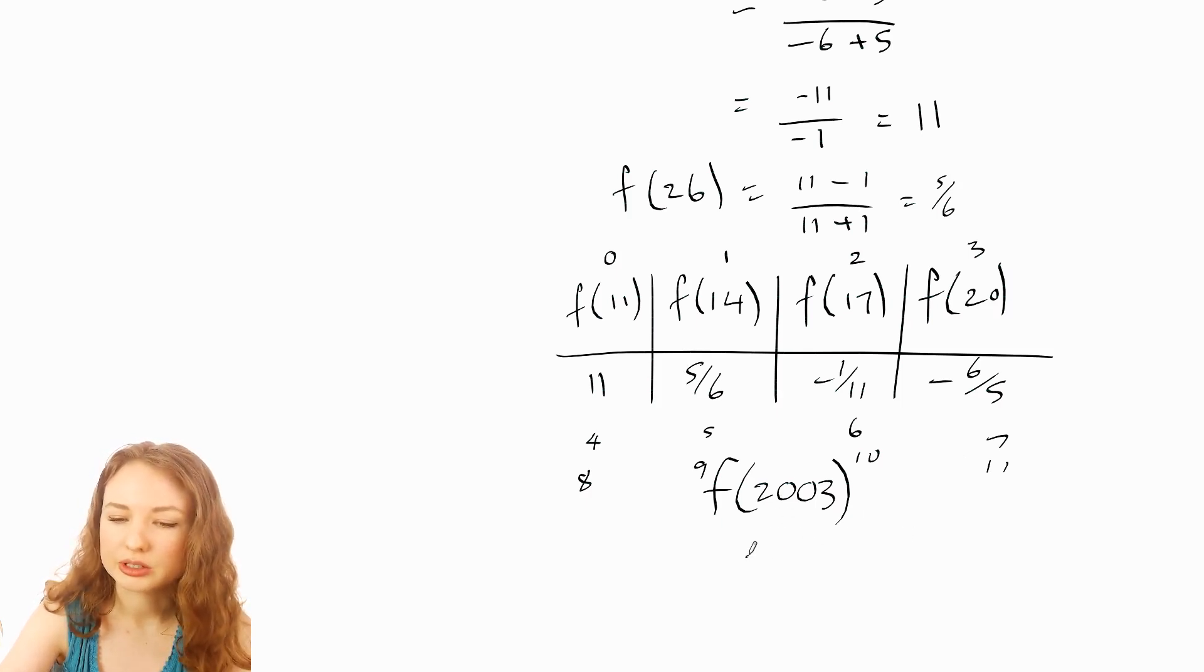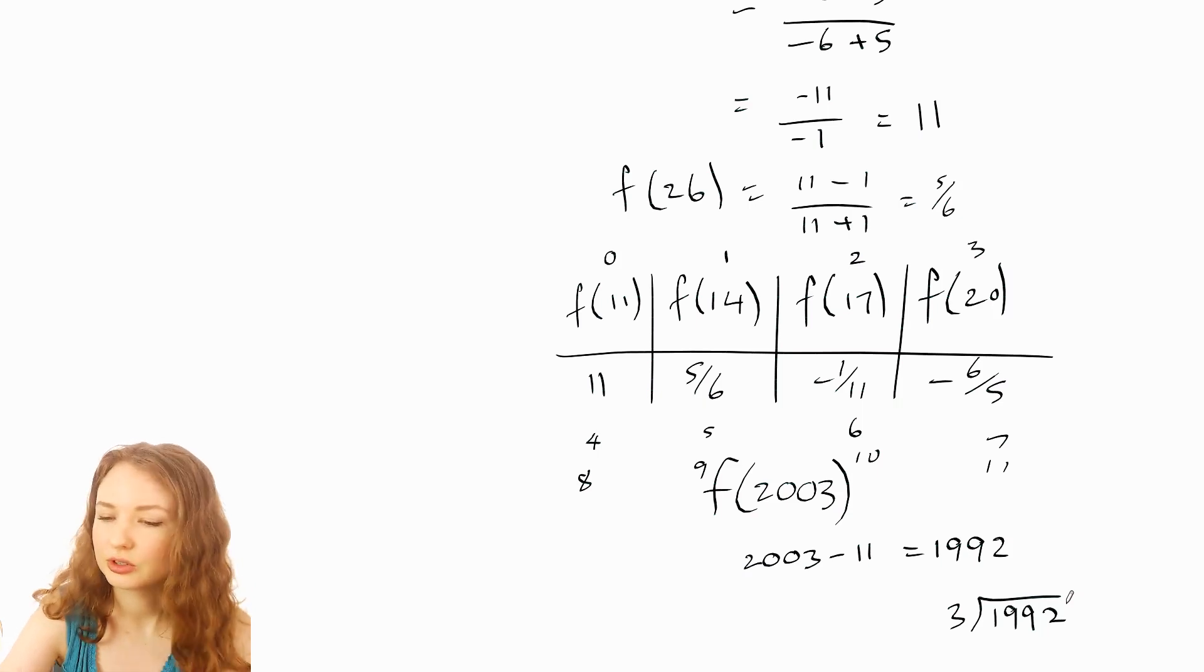The way that I would work that out is I would do 2003 minus 11. That gives 1992. And then divide that by three. So three into 1992. Not allowed calculators for this competition, so... Okay, so 664.